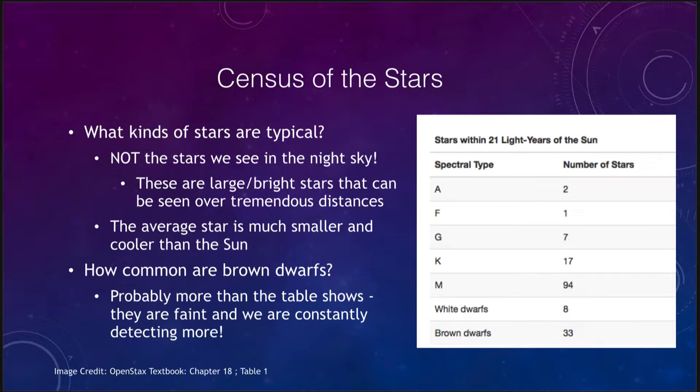What kind of stars are typical? We find that these are not the stars that we see in the night sky. When you go out at night and look up at the stars, those are not the typical stars that exist in the universe. These are very large and bright stars that can be seen over tremendous distances, many of them hundreds or even thousands of light years away. The average star is actually smaller and cooler than the Sun.